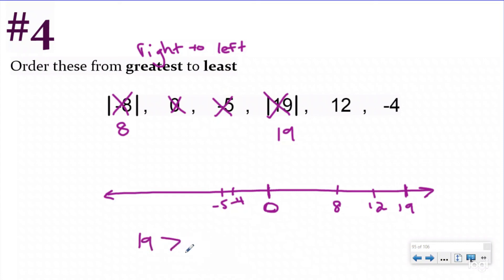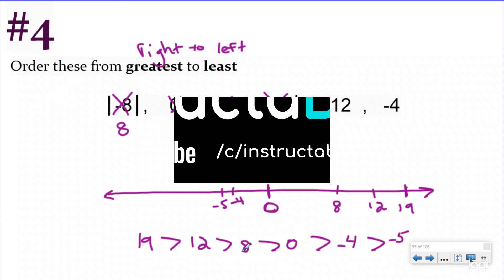So the absolute value of 19 is greater than 12, which is greater than eight, which is greater than zero, which is greater than negative four, which is greater than negative five. So here's my inequality statement, ordering these from greatest to least.